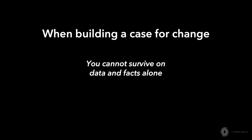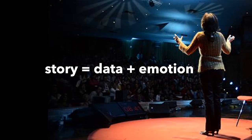So when you're building a case for change, you cannot survive on data and facts alone. You also have to tap into emotions. When you're telling a good story, you're using data to back up your position, but you're also tapping into emotions to capture the attention of your audience and to keep them attentive on what it is you're trying to communicate. If you've ever had a chance to watch a TED talk or a TEDx talk, you'll notice that most of those presenters will oftentimes talk about their topic through the lens of a particular story, of a particular character or user themselves, and that is done purposefully to try to get the audience to connect to the topic at hand.